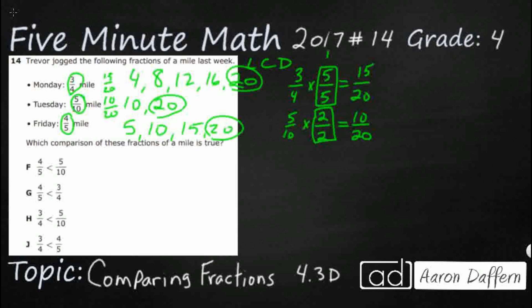I've got 4 fifths times something to equal 20ths. 5 times 4 makes 20, so that's going to be 4 over 4. 4 fourths makes a whole. 4 times 4 is 16. So 4 fifths equals 16 twentieths. Now I've got my 3 fractions converted.